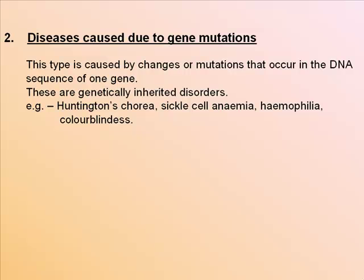Diseases caused due to gene mutations are caused by changes or mutations that occur in the DNA sequence of one gene. These are genetically inherited disorders. Examples include Huntington's chorea, sickle cell anemia, hemophilia, and color blindness.